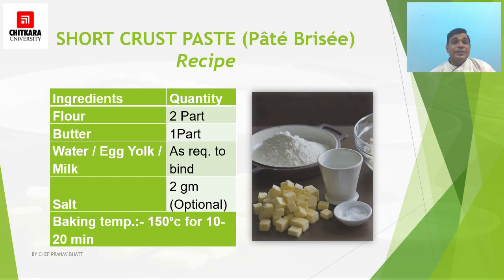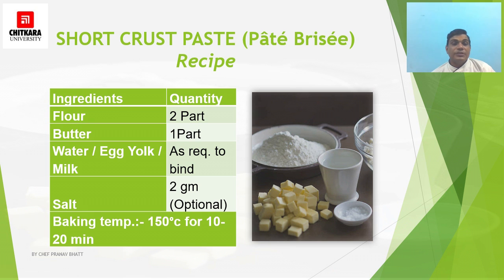The recipe for short crust paste uses flour at 2 parts and butter at 1 part, along with water as required to bind. Salt is optional at 2 grams. The baking temperature for short crust paste is 150°C for 10 to 20 minutes, depending on the product.